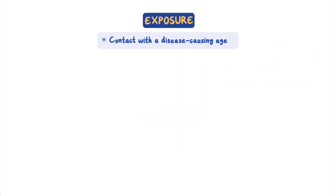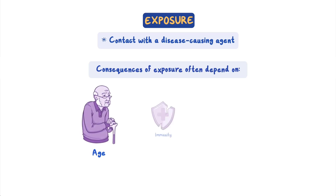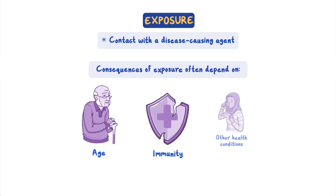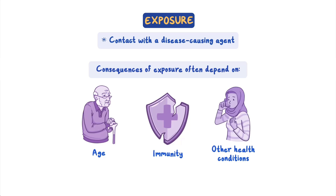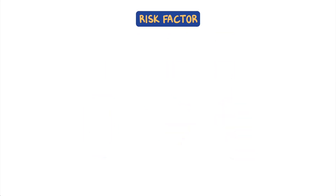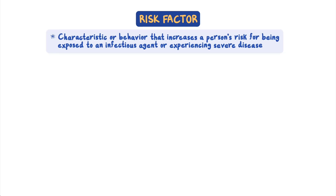In this disease outbreak, an exposure is contact with a disease-causing agent. The consequences of an exposure often depend on factors such as age, immunity, and a person's other health conditions. A risk factor is a characteristic or behavior that increases a person's risk for being exposed to an infectious agent or experiencing severe disease.